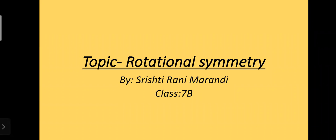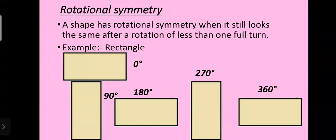Good morning and Jaiheen. I, Srishti Rani Marandi from class 7B, am going to explain the topic rotational symmetry. A shape has rotational symmetry if it still looks the same after a rotation of less than one full turn, meaning less than 360 degrees.